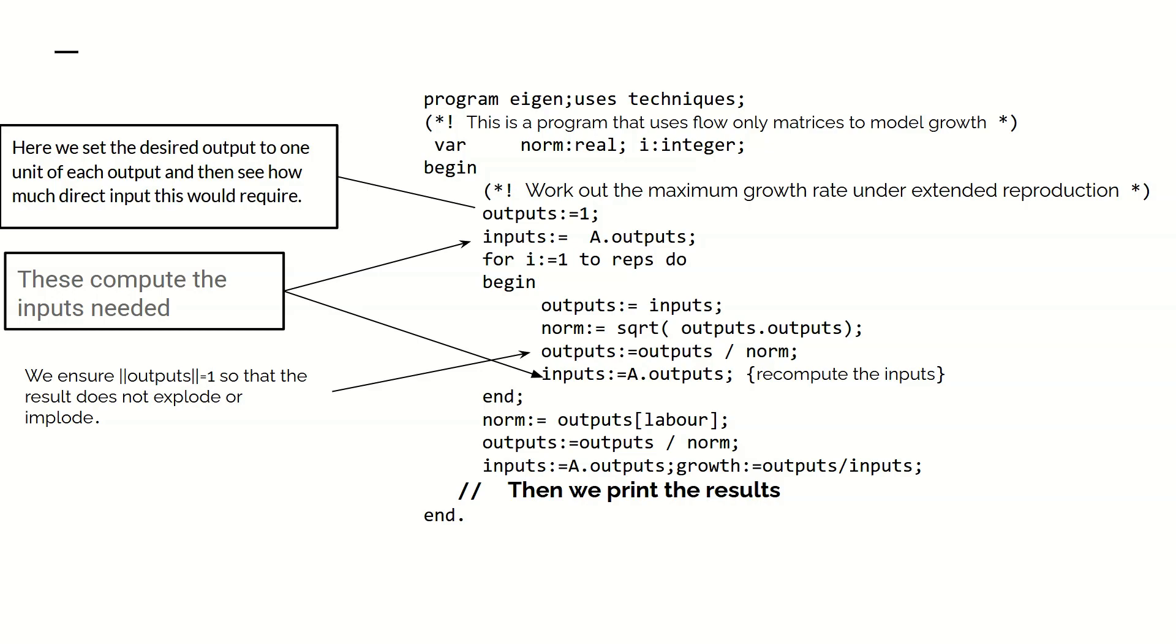This is the program I presented before, very slightly changed for clarity and fitting onto the page. And it shows how you can extract the maximum rate of growth of the economy and the eigenvector from an input-output table. Basically, what we're doing is these steps compute the required inputs. And we iterate round, setting the outputs to the inputs. We then work out the length of the output vector, its norm, and divide the output vector by its norm. So, we're scaling it so it has a length of 1. This prevents the thing exploding or imploding. And we repeatedly do this. And after a certain number of repetitions, we find it will converge on the eigenvector.